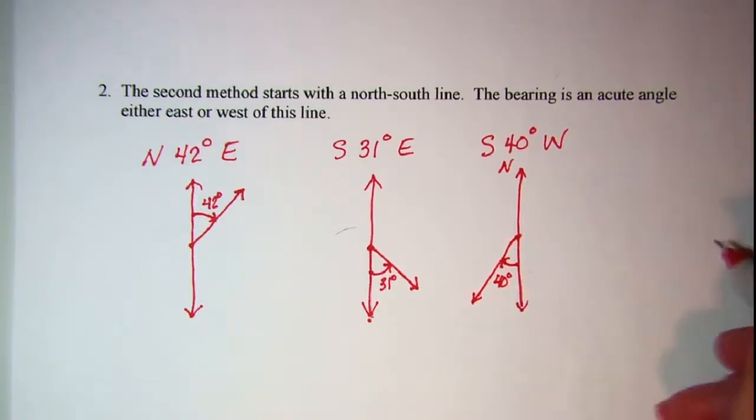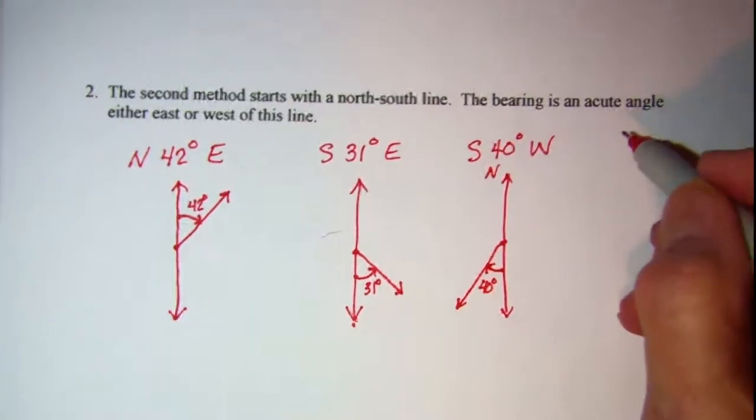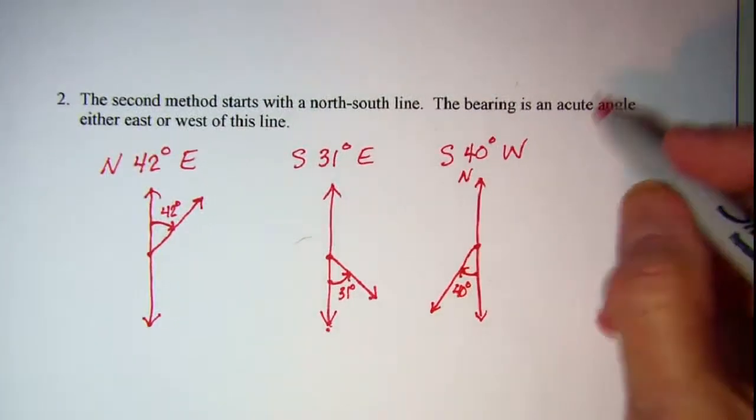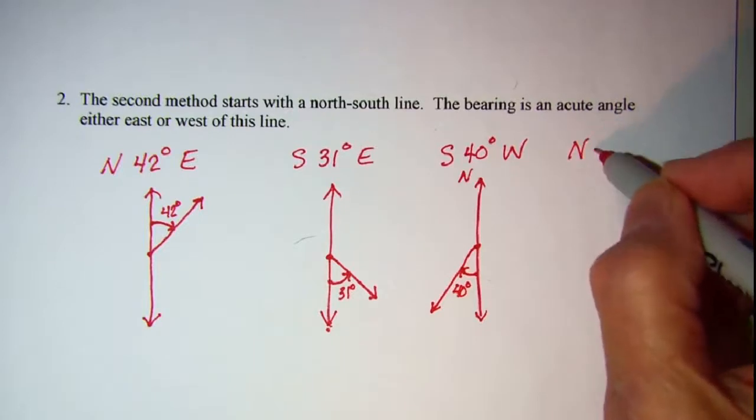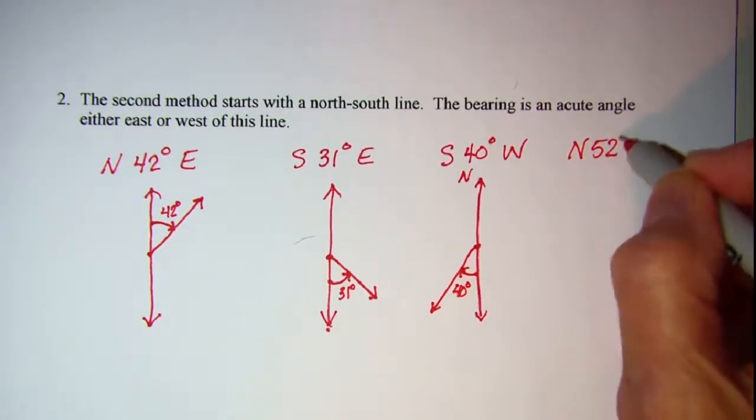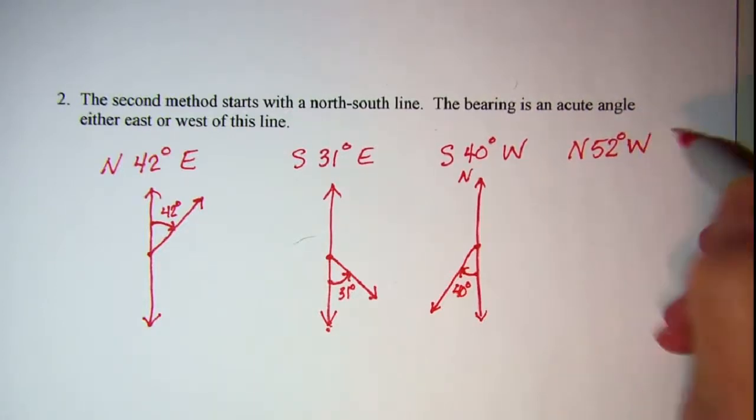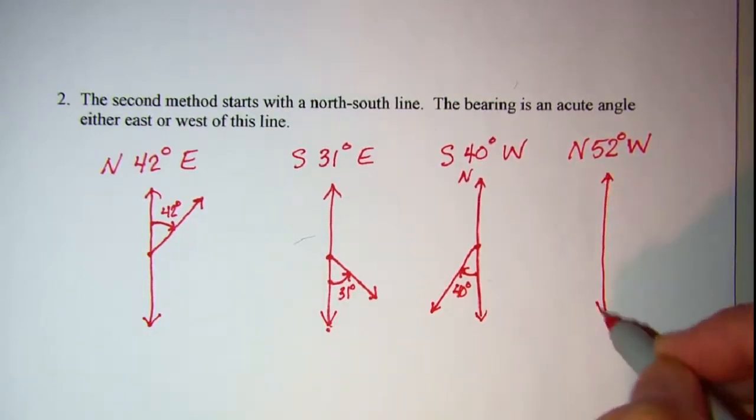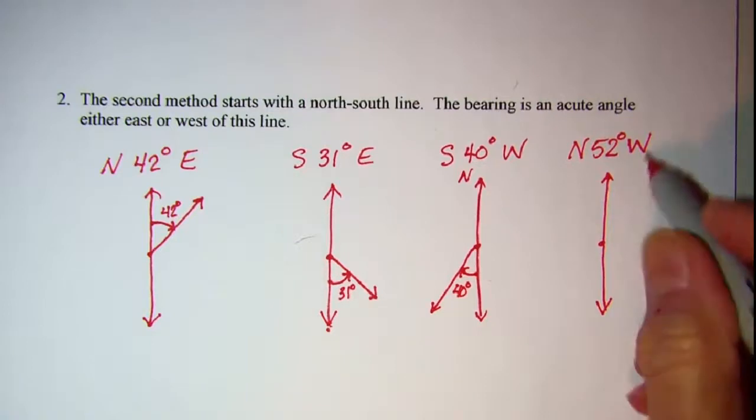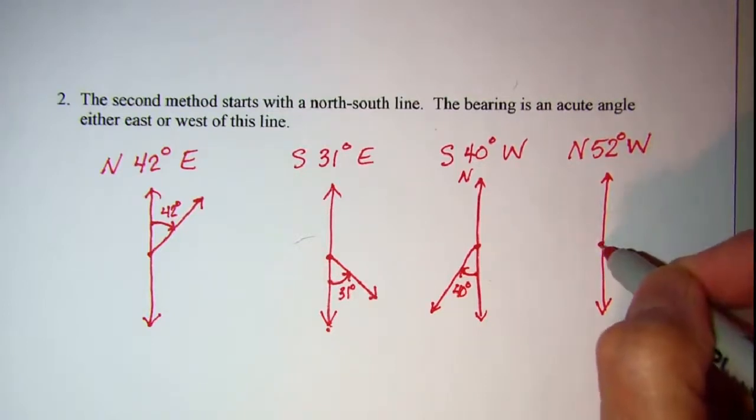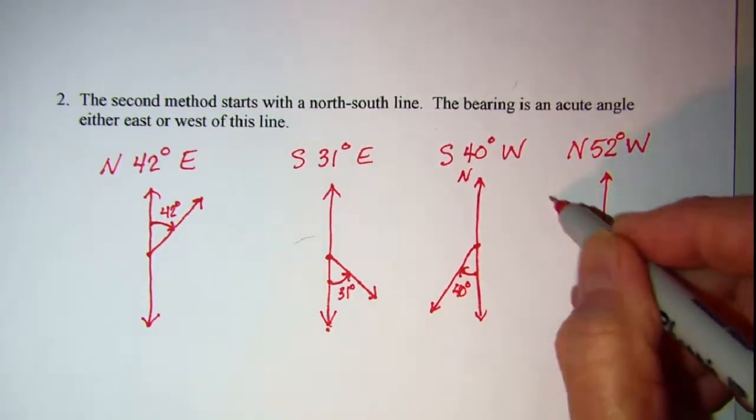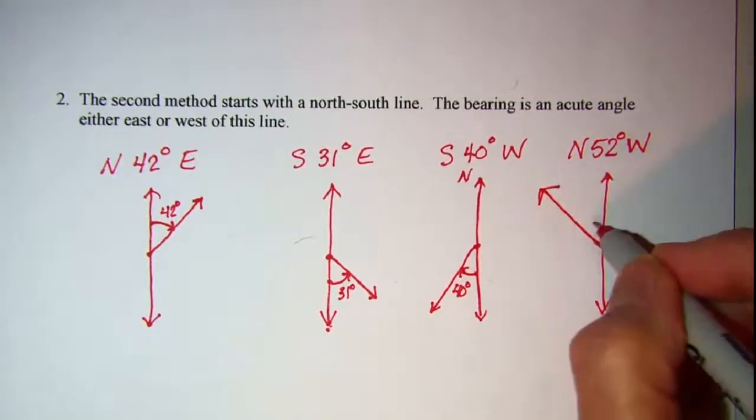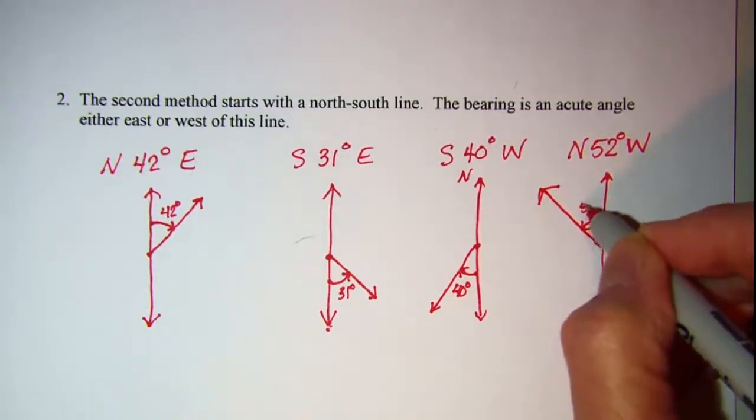And then a bearing of north 52 degrees west, start with your north-south line and we want to go west, so 52 degrees, this angle would be 52 degrees.